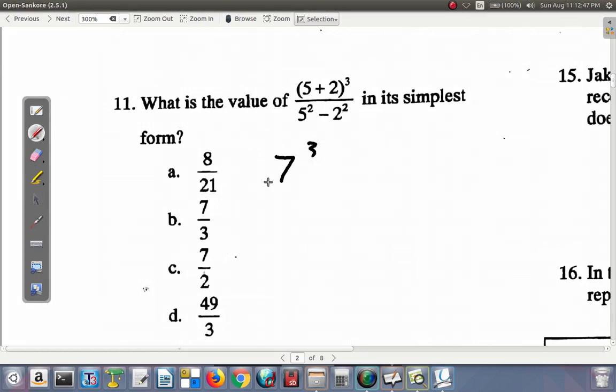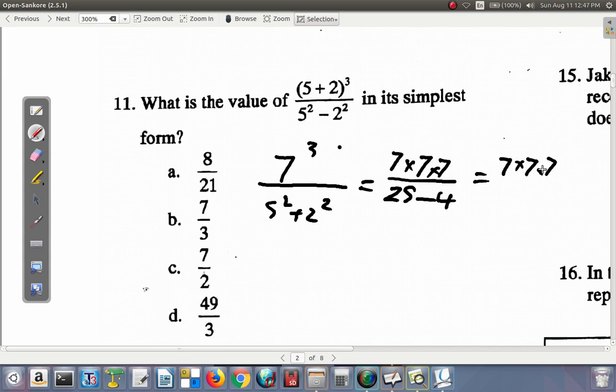So it's 7 cube all over 5 square plus 2 square. 7 cube means you have 3 sevens multiplied with one another, so 7 times 7 times 7 all over 5 square, which is 5 times 5, that's 25, minus 2 squared, which is 4. 25 minus 4 is what? 21.